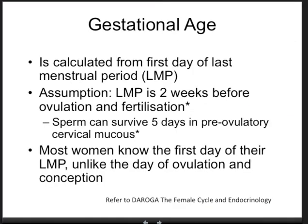The gestational age is calculated from the first day of the last menstrual period, and we assume we're dealing with a lady with a regular 28-day cycle — Mrs. Regular, or maybe Mrs. Boring. The last menstrual period is exactly two weeks before ovulation and fertilization. Sperm can survive in the female genital tract for about five days when circumstances are ideal, such as when the pre-ovulatory mucus is thin and watery.